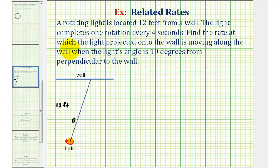Let's take a look at our diagram. This would be the light projecting onto the wall here. Notice the distance from the light to the wall is 12 feet. The light's angle perpendicular to the wall would be this angle here labeled theta.